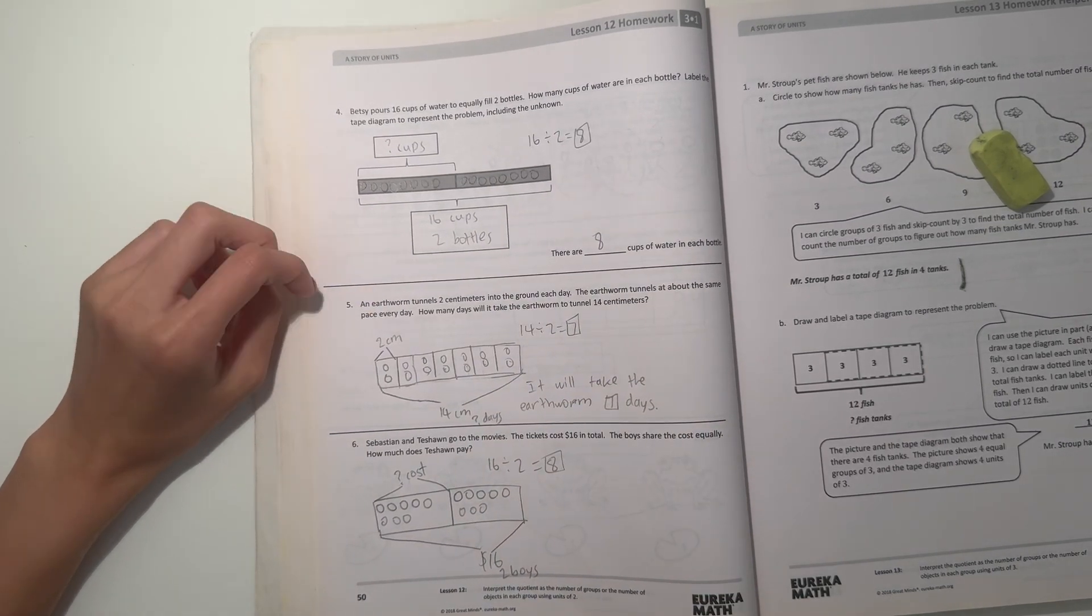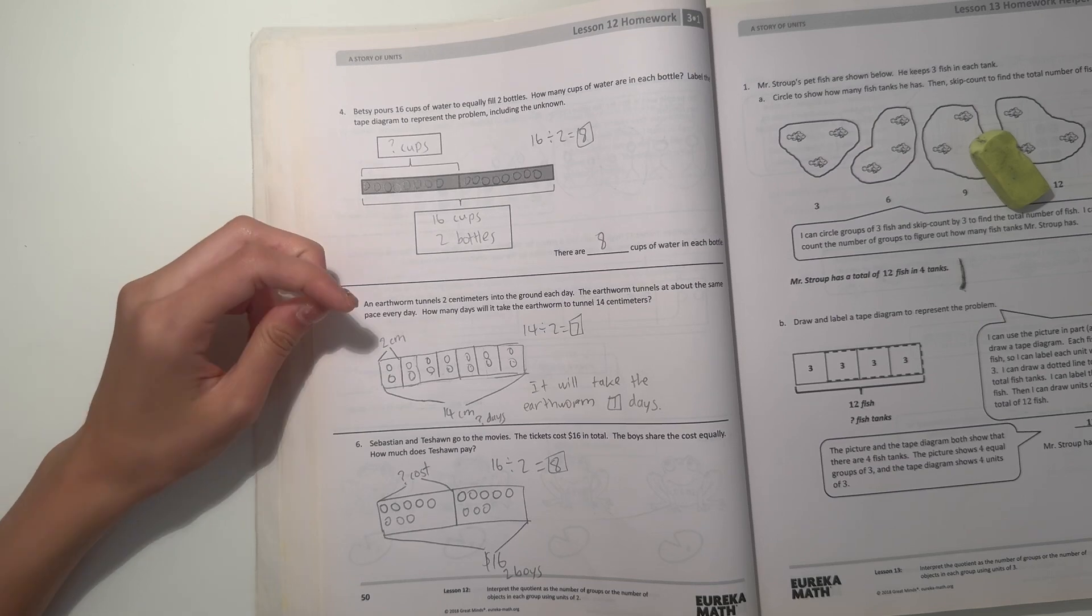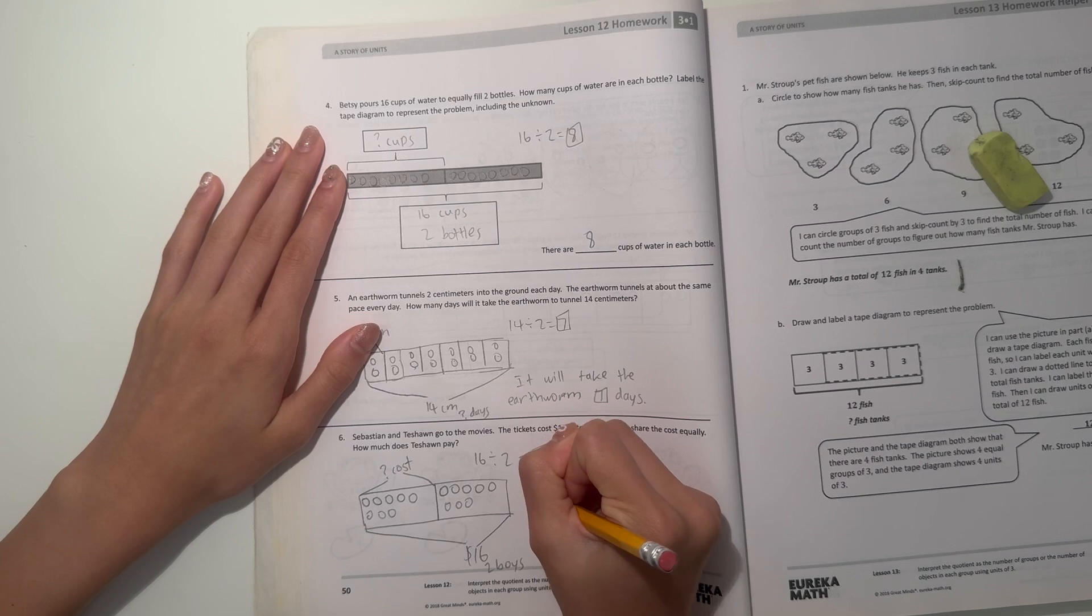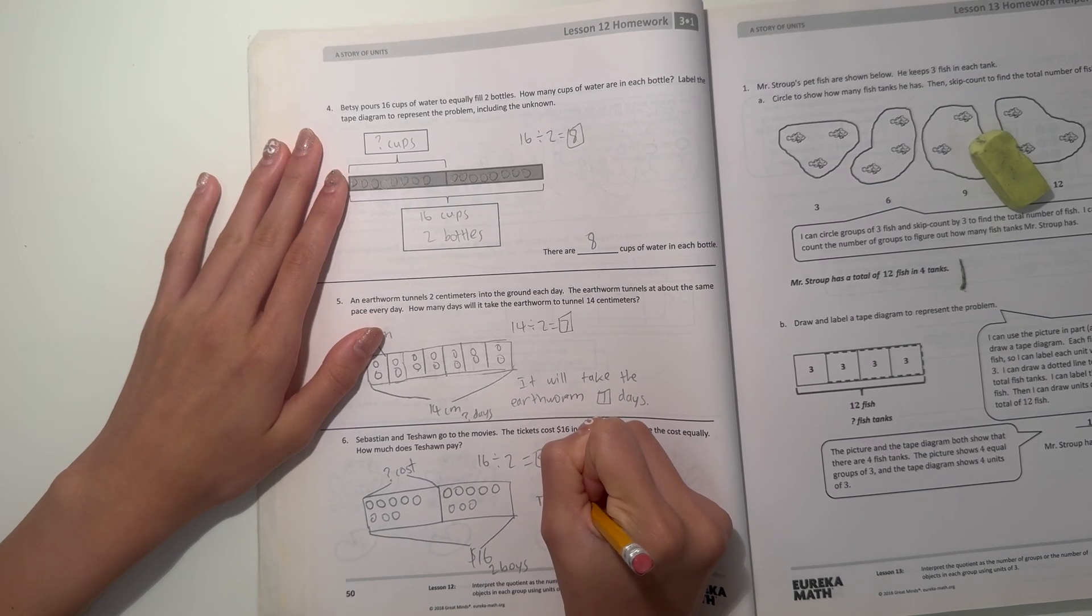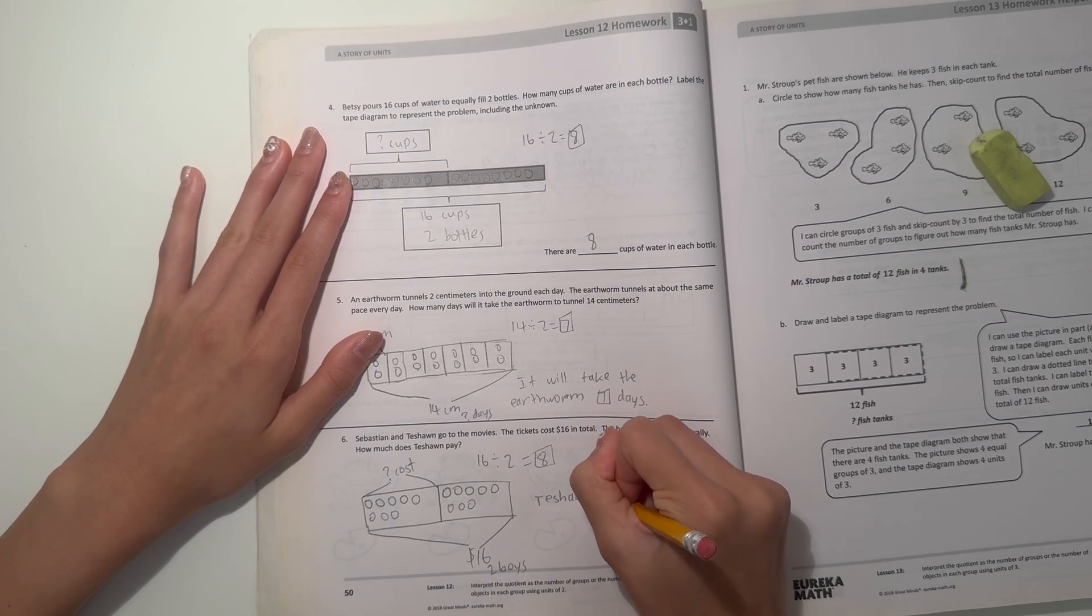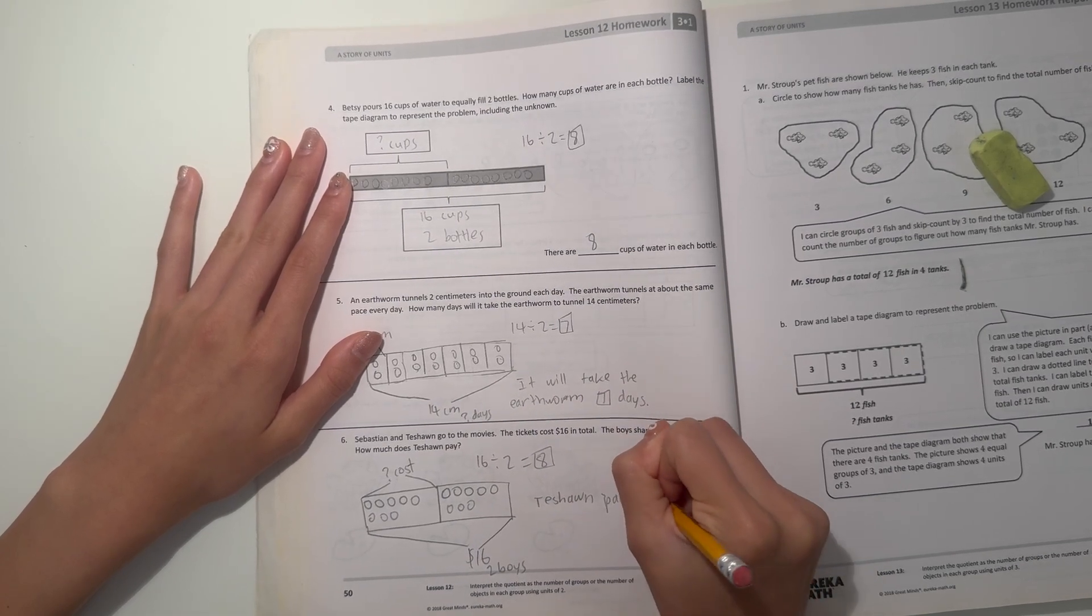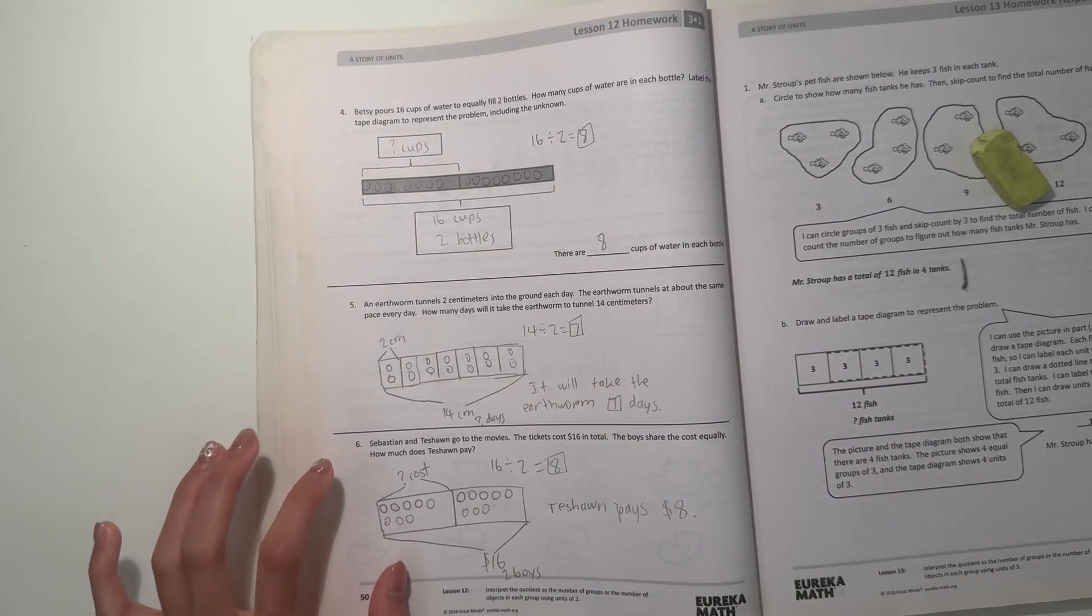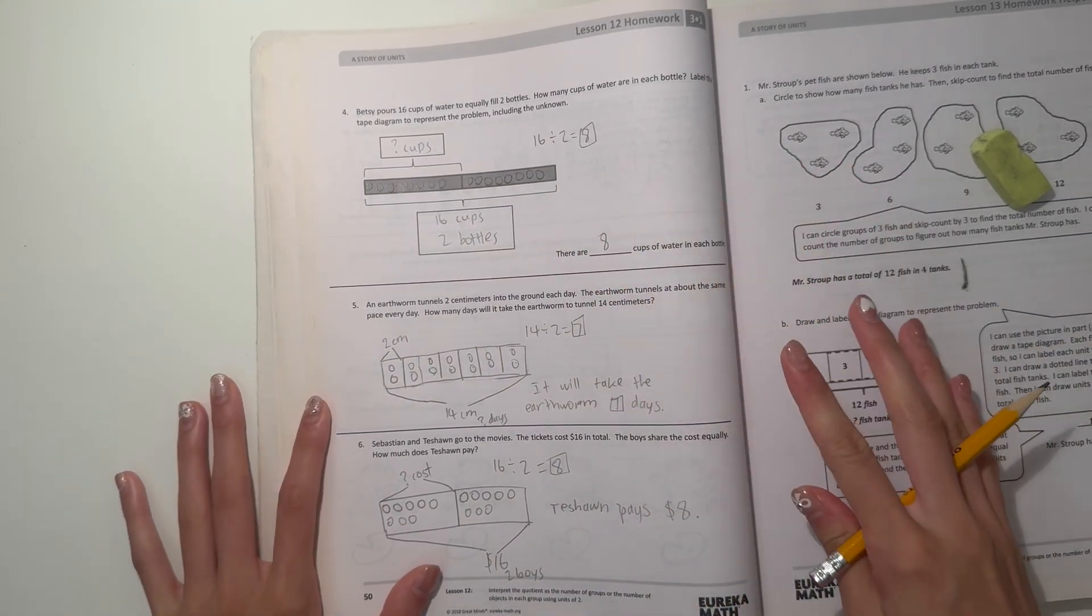So that would be 8, which means 16 divided by 2 boys is 8, which means each of the boys are paying $8. So that means that Tashaun pays $8, and as does Sebastian since they're sharing the cost equally.